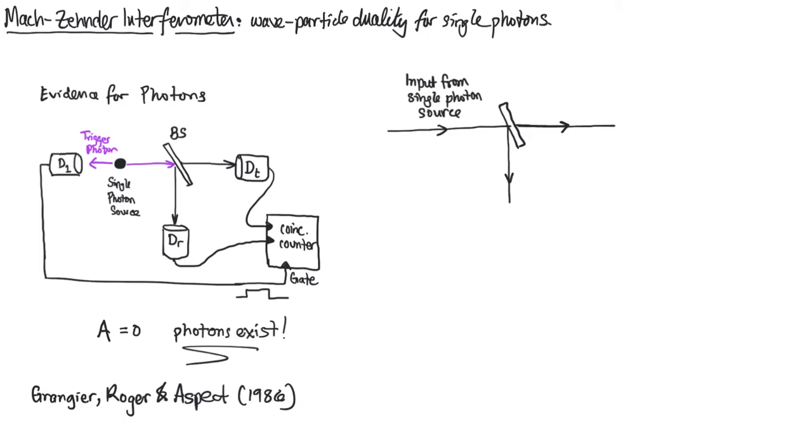They take that input from the single photon source, and just like last time, they feed it into a beam splitter. And that creates two paths. Instead of putting a detector on each of these two paths, they do something different. They're going to recombine the beams.